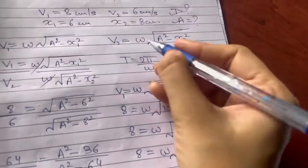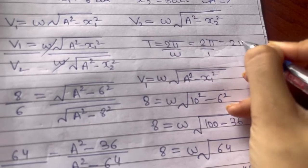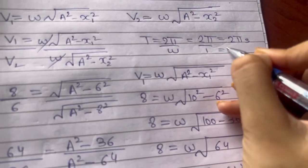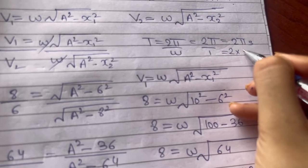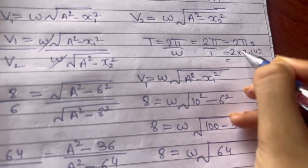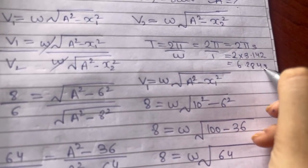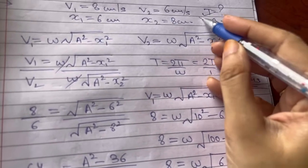So I will substitute that over here. That is 2 pi upon 1, that is 2 pi seconds. Or you can also write it like this: 2 into pi ka value 3.142, 2 2s are 4, 2 4s are 8, 2 1s are 2, 2 3s are 6. 6.284 seconds is the time period. Even that is calculated.